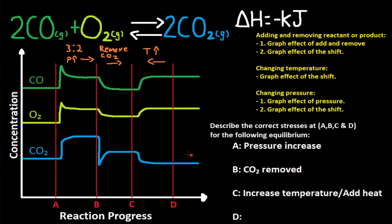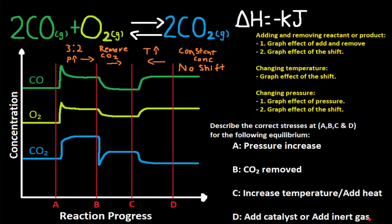At D, CO2, O2, and CO are all staying constant — there is a constant concentration, which means it's not shifting. What stress causes no shift? Adding a catalyst or an inert gas causes no shift.